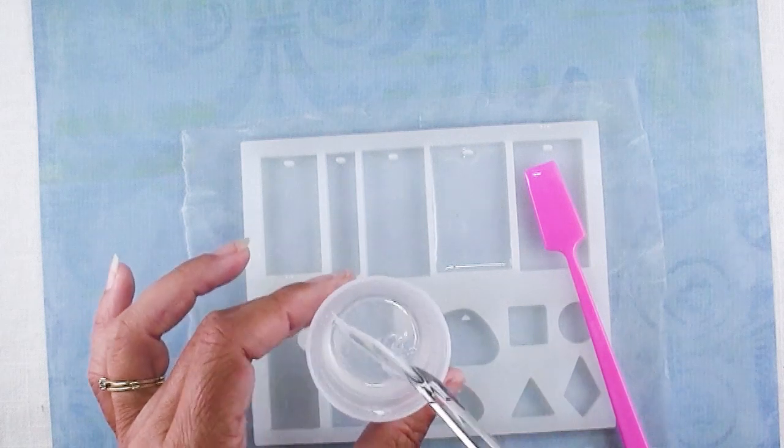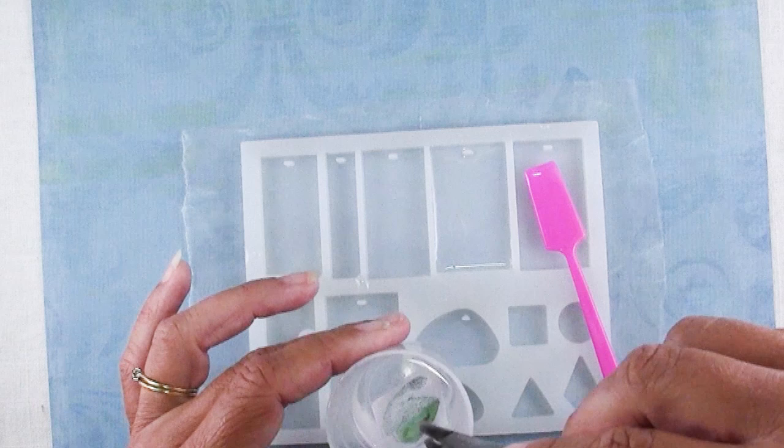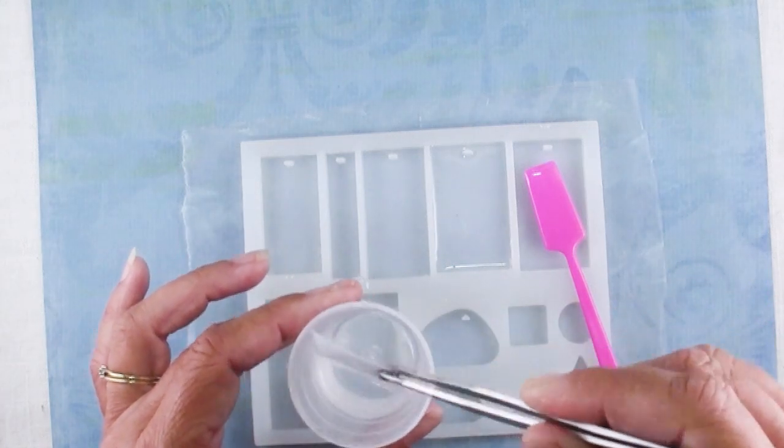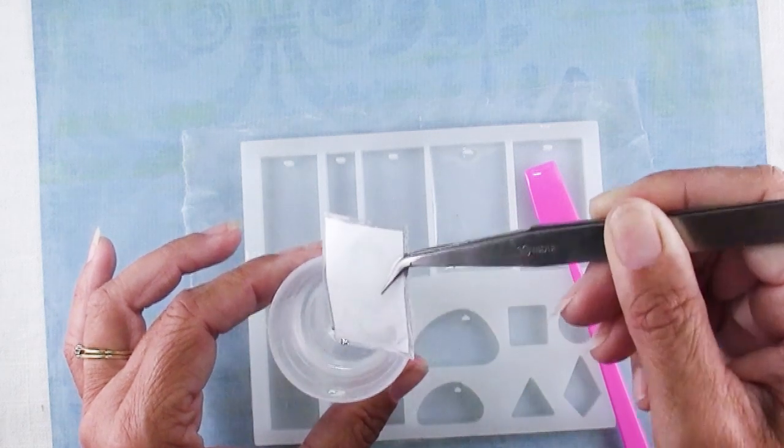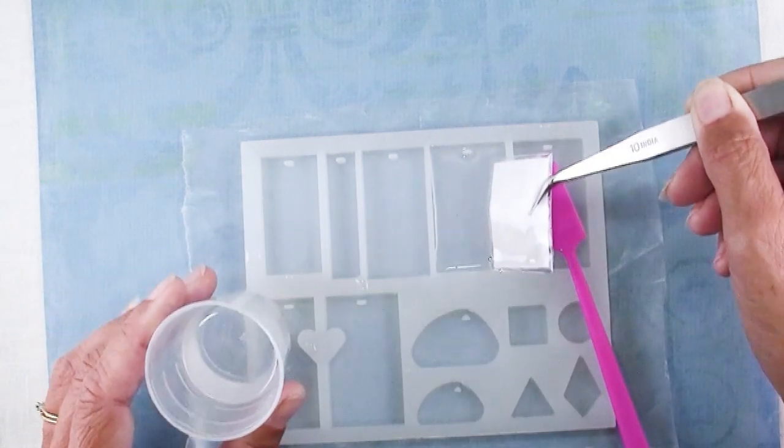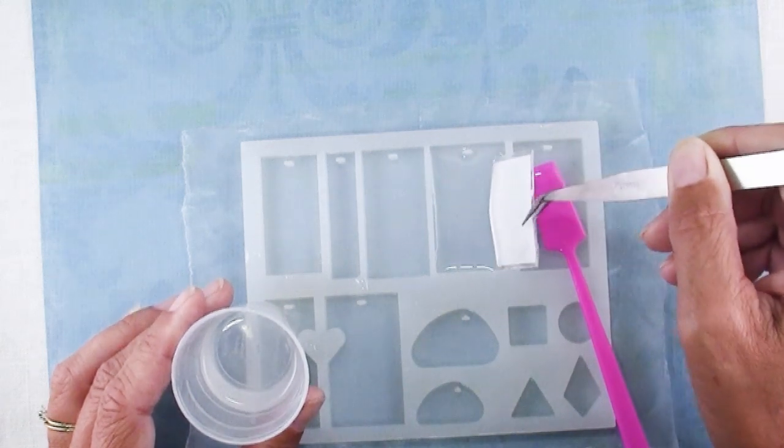This would go also for things like dried flowers. This helps make sure that you don't have air bubbles and another way to make sure you don't have air bubbles is to put it in at an angle.